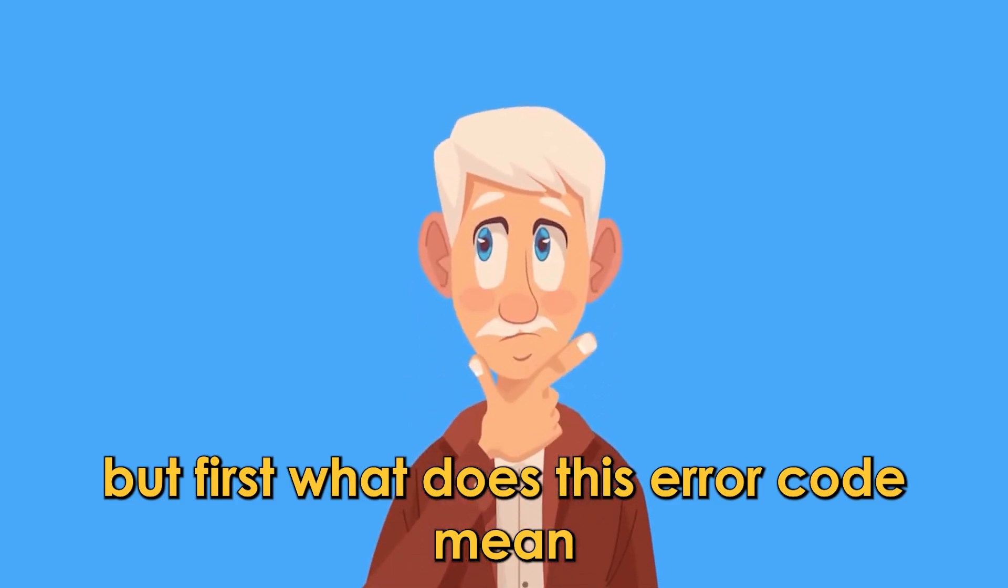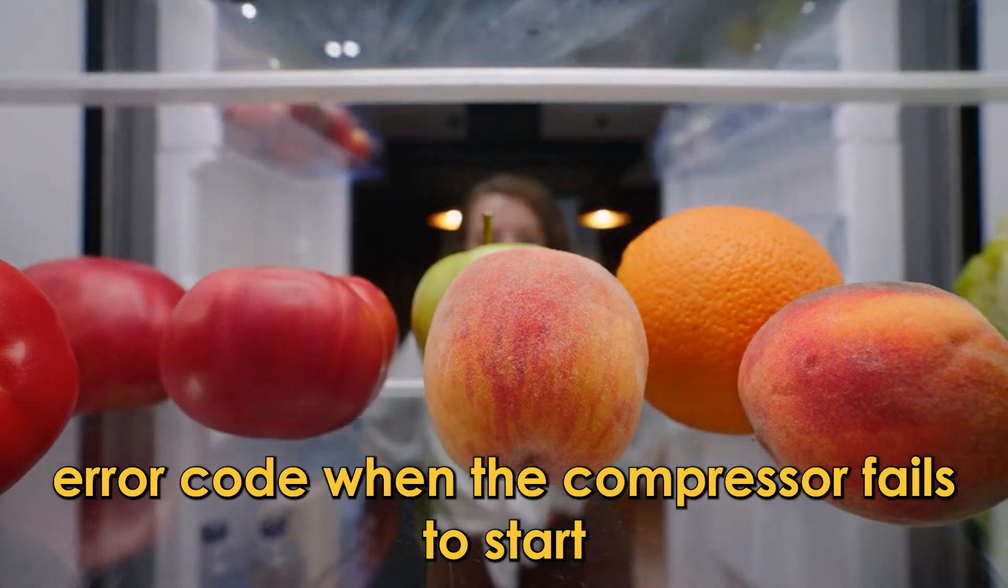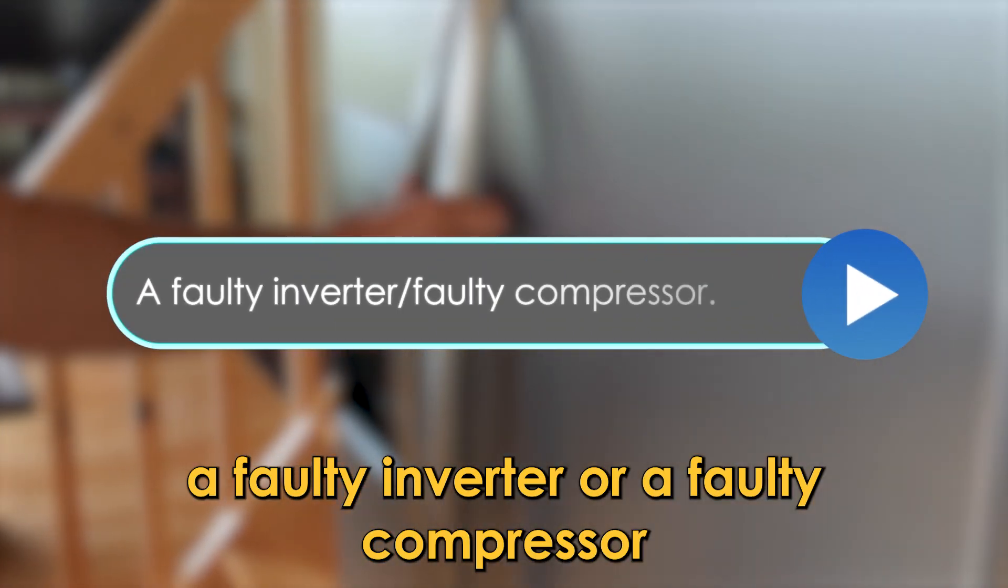But first, what does this error code mean? Your Samsung fridge displays the 81C error code when the compressor fails to start. The following are some of the common causes of this error code: a faulty inverter, or a faulty compressor.